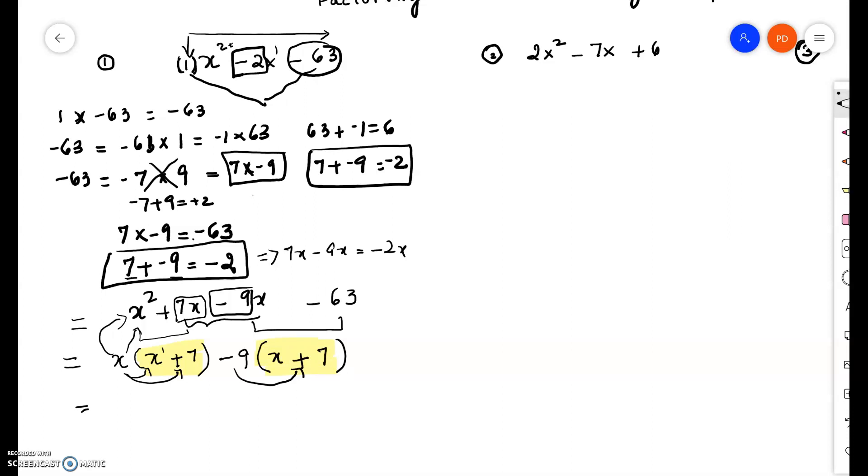So we can factor out. It can be factored further. So we factor out an x plus 7. Now we write down the leftover terms. Let's see if I can highlight this. We write down the leftover terms. So if I factor out an x plus 7, I get, I am left with an x. If I factor out an x plus 7 from the second term, I am left with a negative 9.